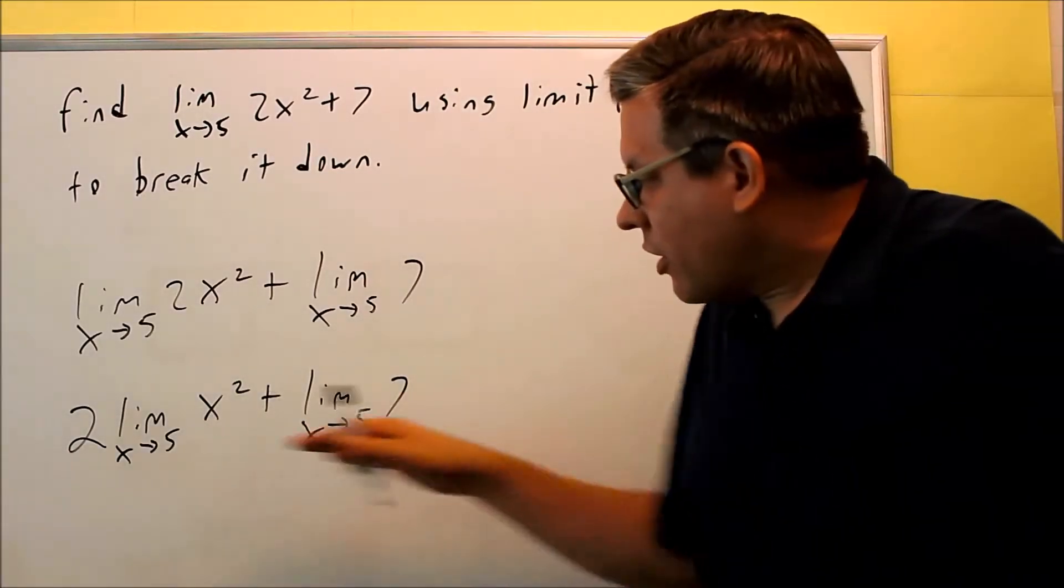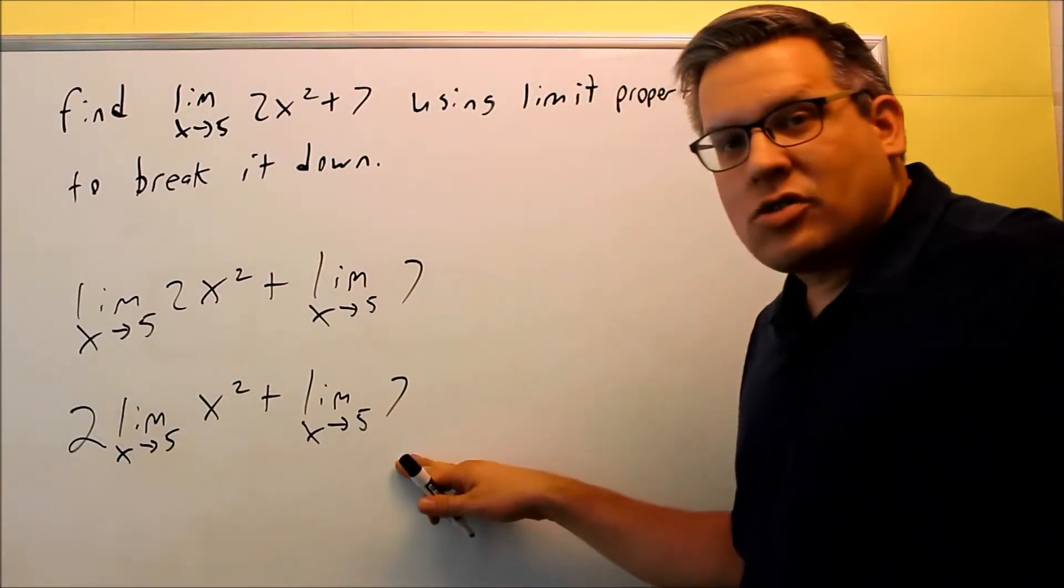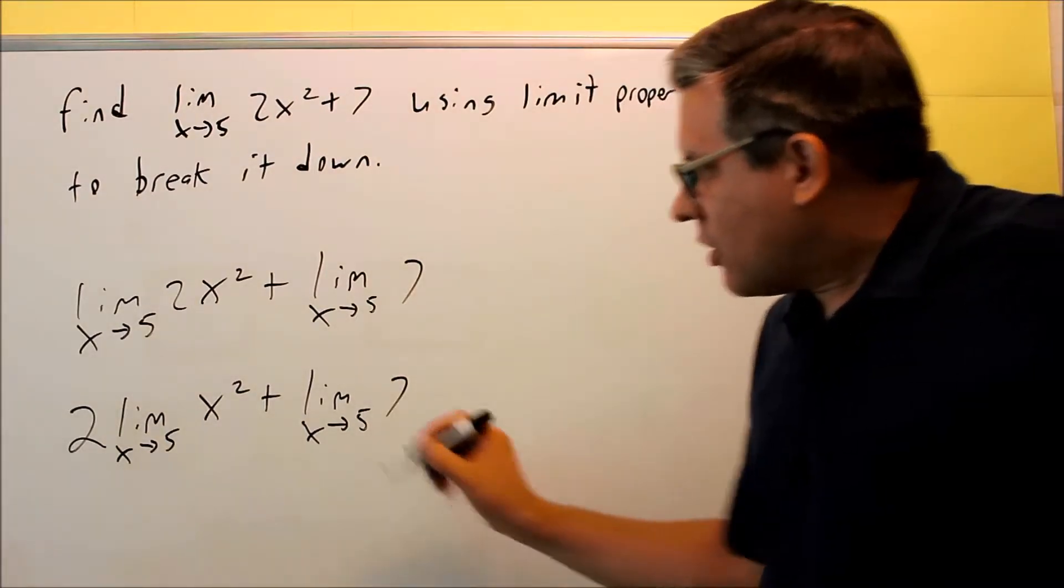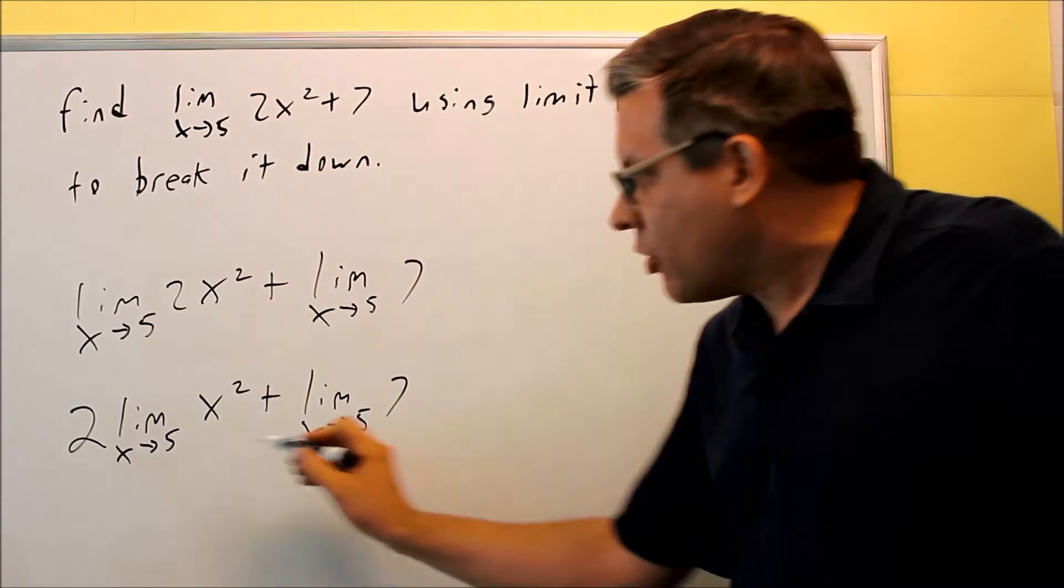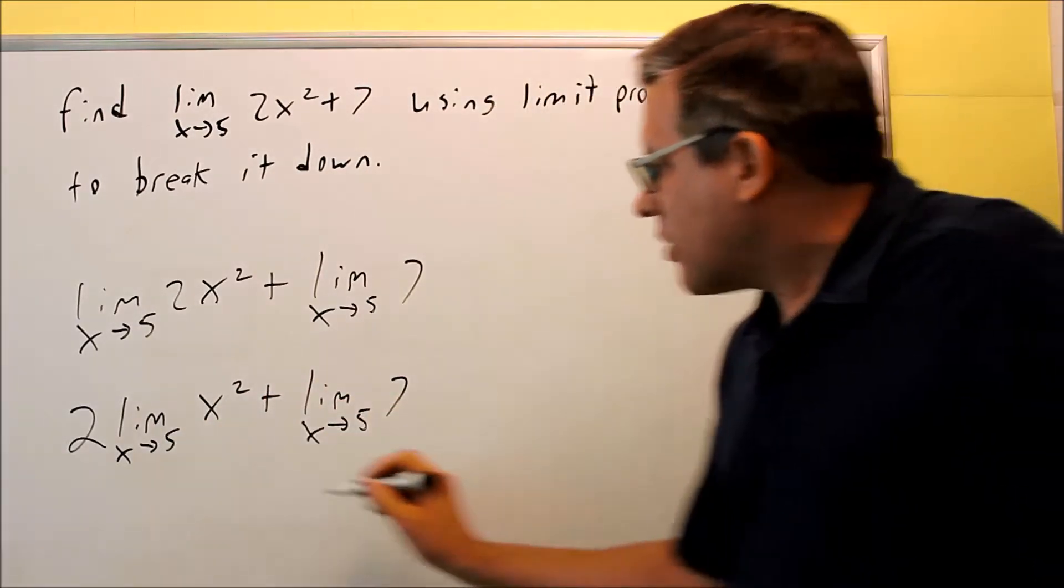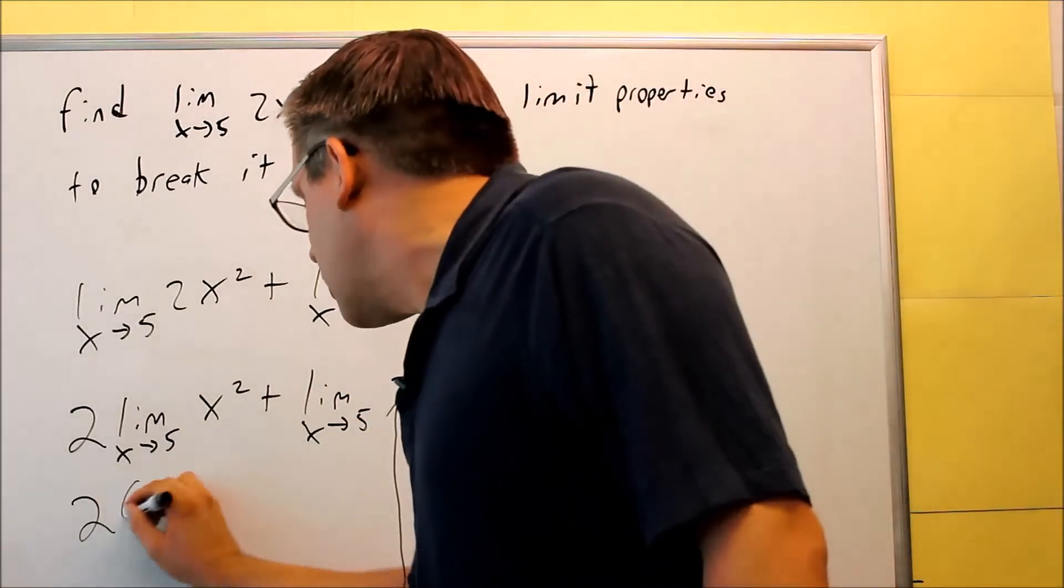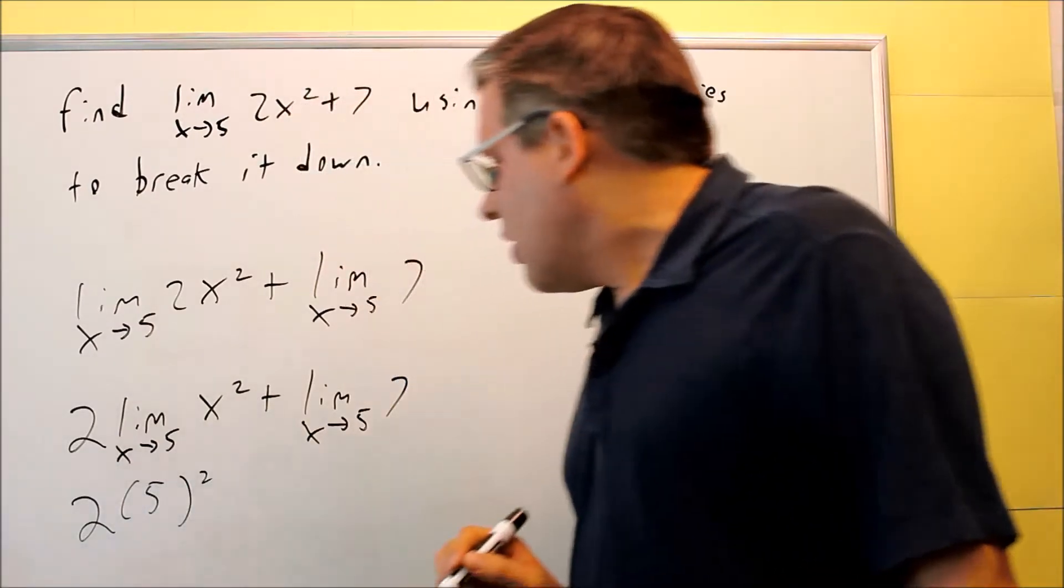Okay, so now that we've broken that up, we can now apply the limit to each of these separately. The limit as x approaches 5 of x squared, that means that we're just going to put a 5 in for x. Okay, so that means it'll look like this. We have 2 times 5 squared.